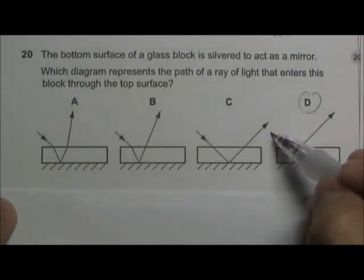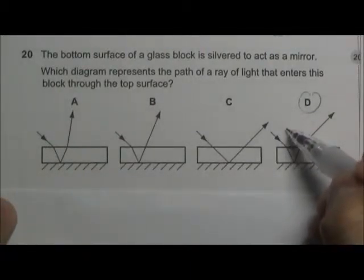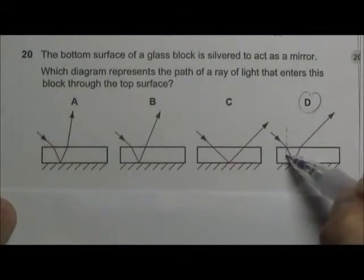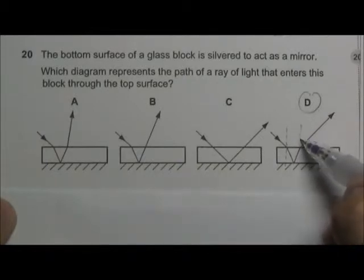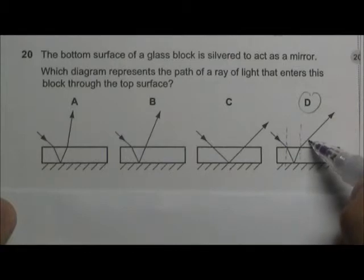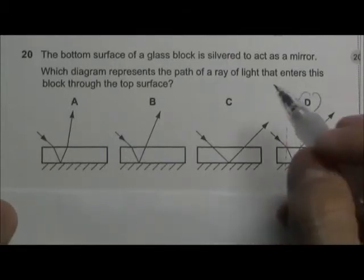When the light ray comes in, because it's traveling from an optically less dense to a denser medium, it will bend towards the normal. The light ray will undergo reflection on this reflecting surface. When it moves out of the glass block, it's traveling from an optically denser to a less dense medium, so the light ray will bend away from the normal. So the answer is D.